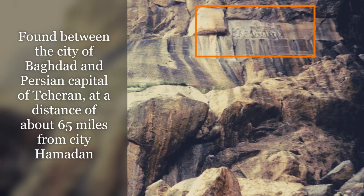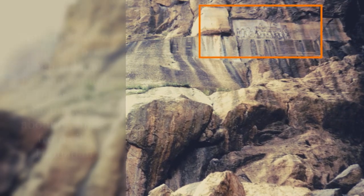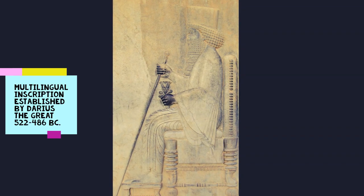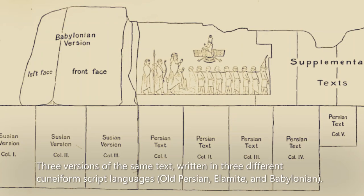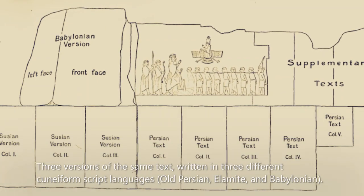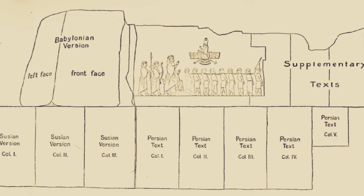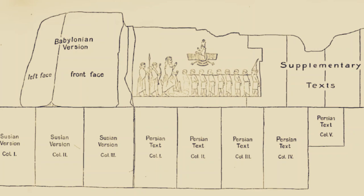It was found between the city of Baghdad and the Persian capital of Tehran, at a distance of about 65 miles from the city of Hamadan. It is a multilingual inscription established by King Darius the Great, from 522 BC to 486 BC. It includes three versions of the same text written in three different cuneiform script languages: Old Persian, Elamite, and Babylonian.